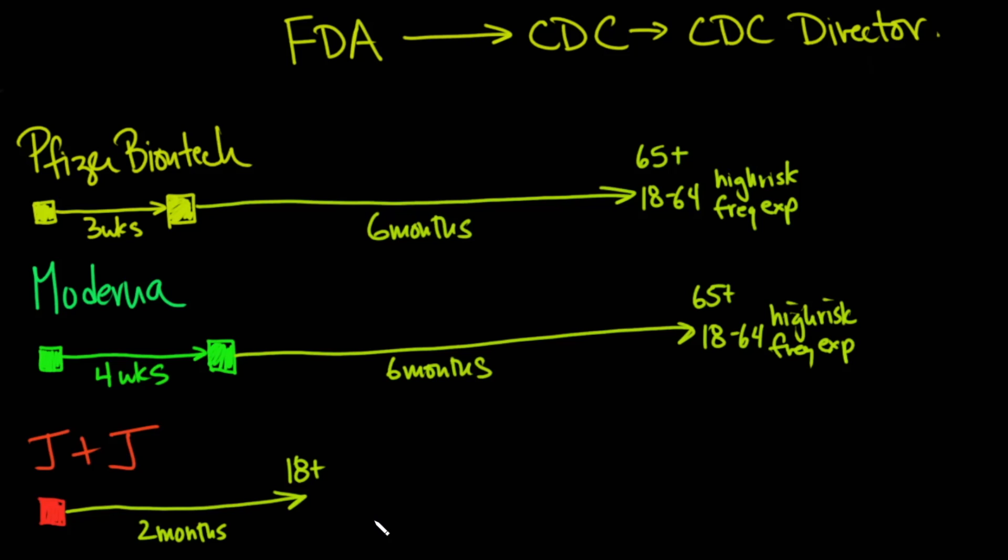There is no qualification of 65 years of age or high risk or anything else. In other words, they're looking at you to get a second dose or a booster after the first Johnson & Johnson.